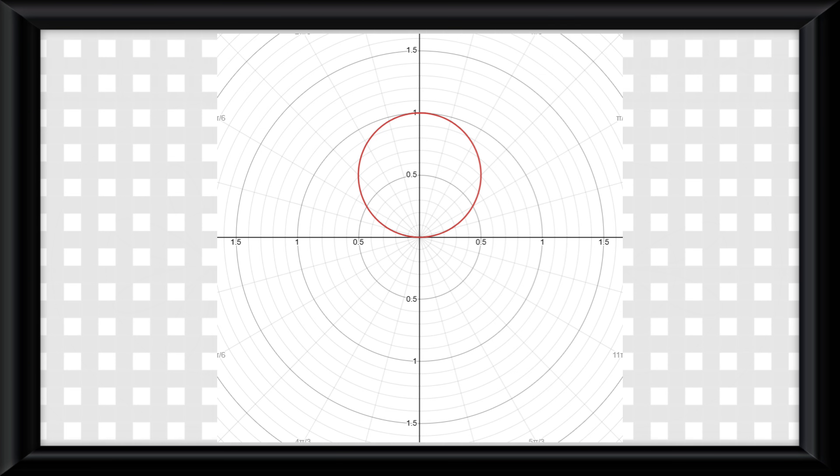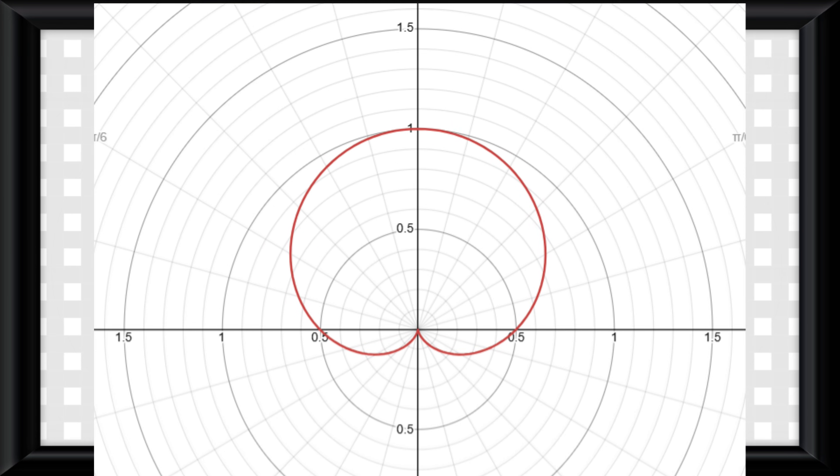A circle happens when you don't have an a. It looks like a circle on a graph. A cardioid happens when a is equal to b. It looks like this on a graph, and I've heard it being compared to a heart before.